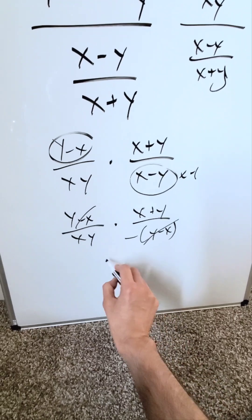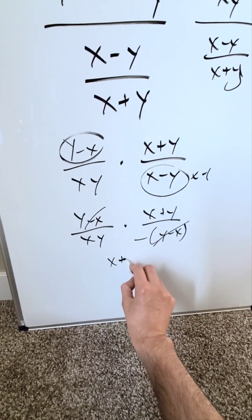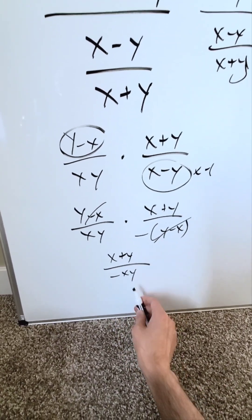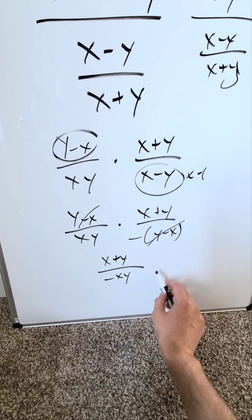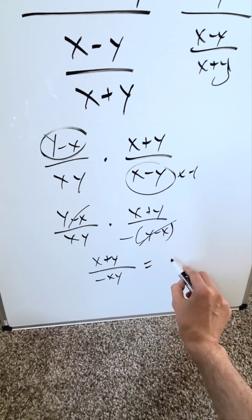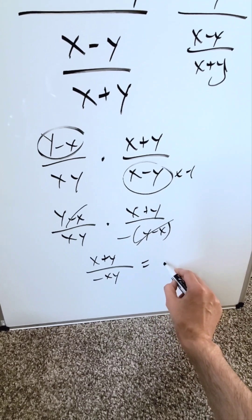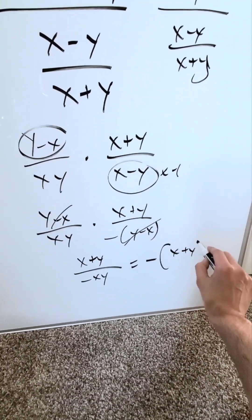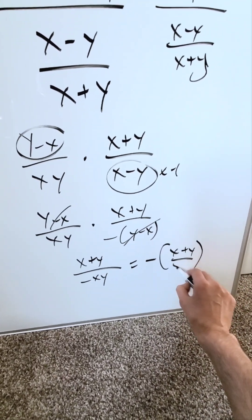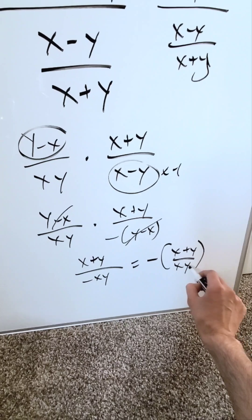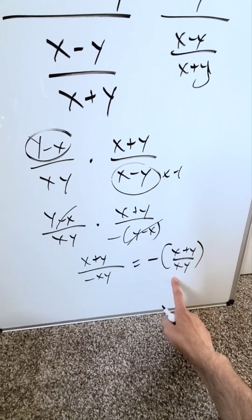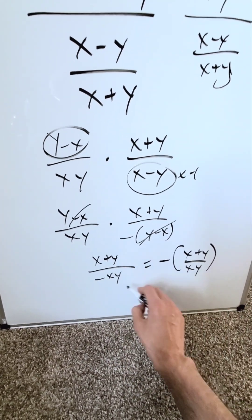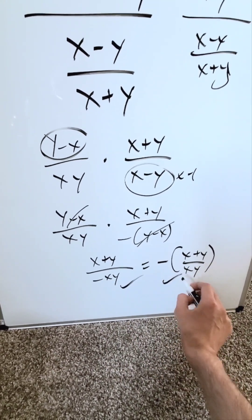Now what do I have in the numerator? x plus y. In the denominator, I have minus xy. This here is your end result, or write your answer in a better way as: minus x plus y over xy. And this right here is a good answer, as is this. Either of these are acceptable — both good.